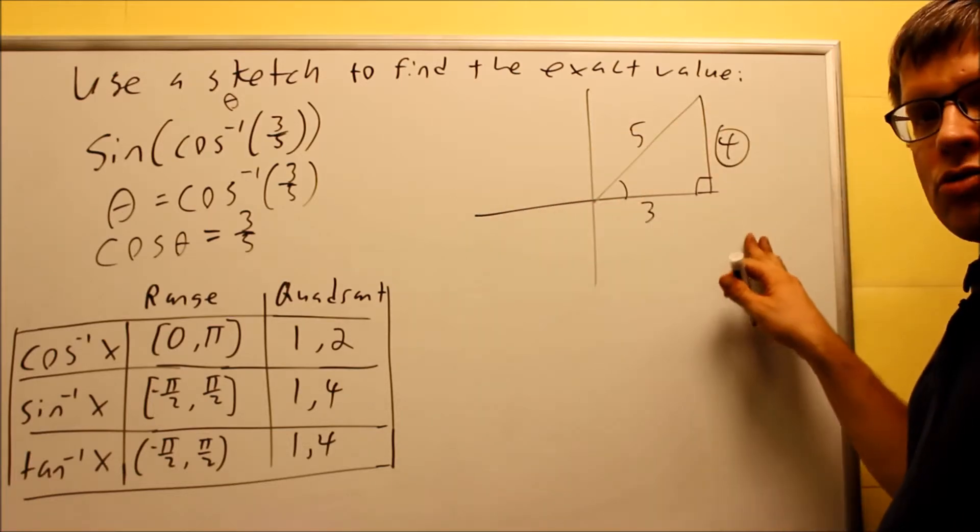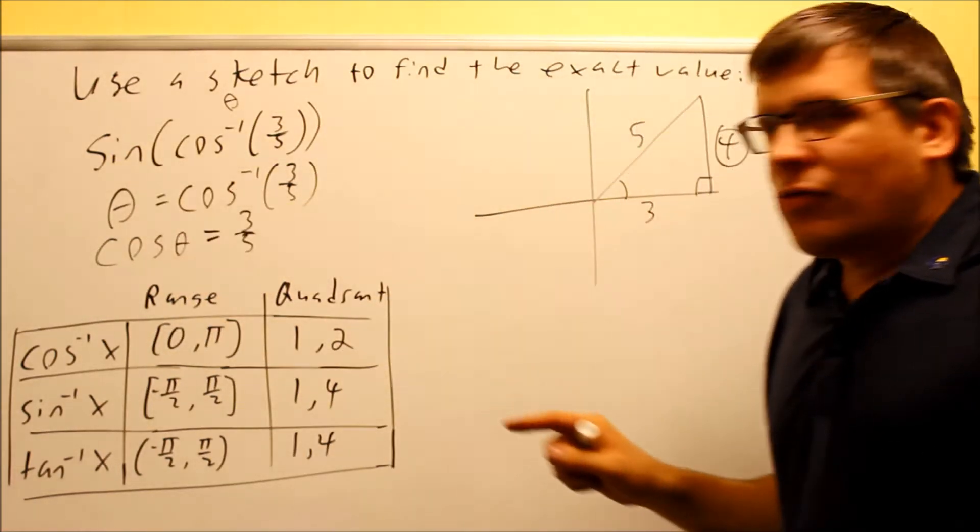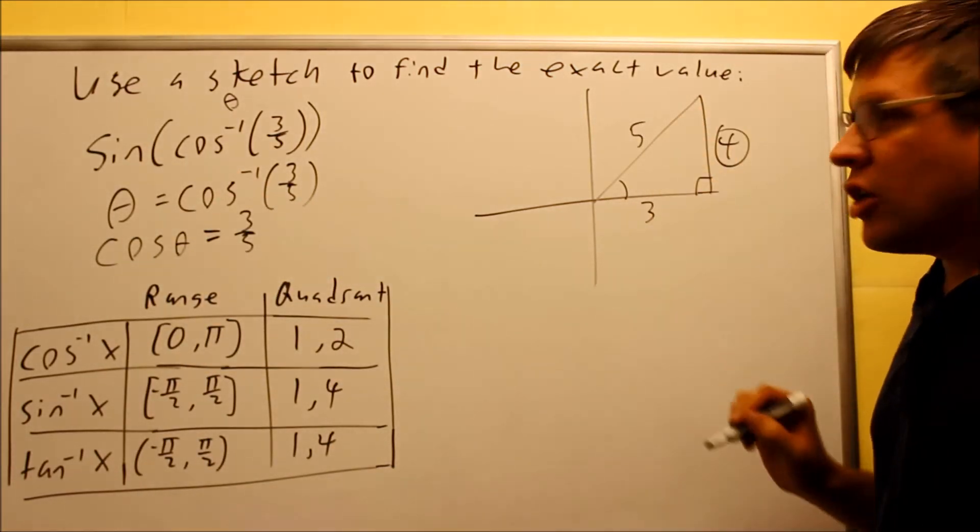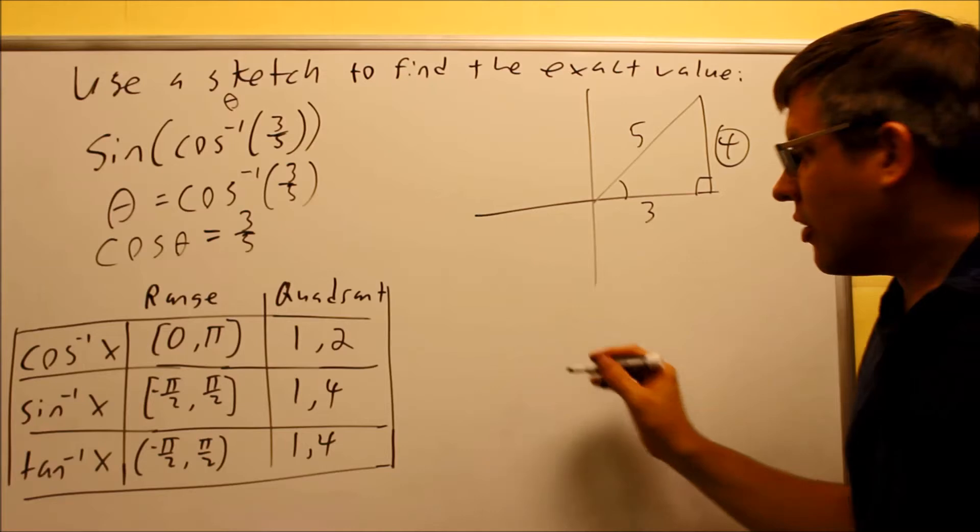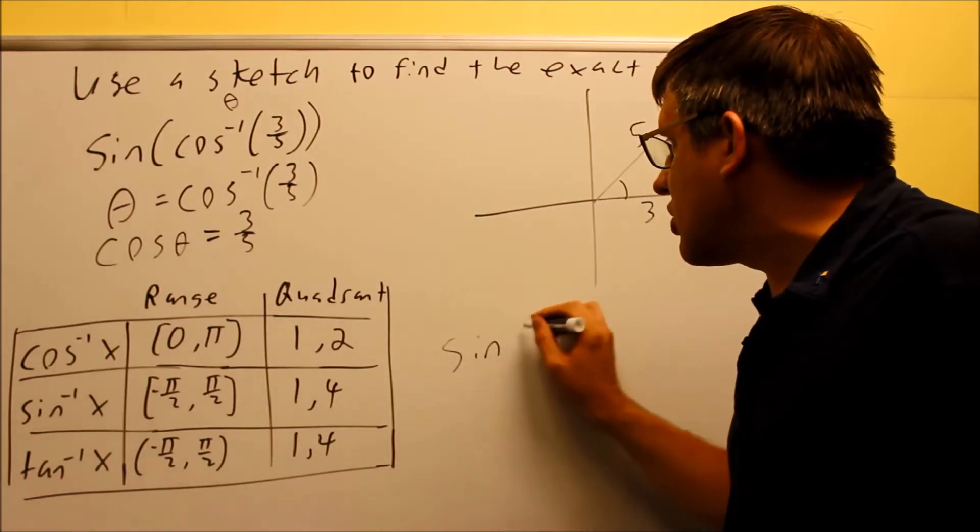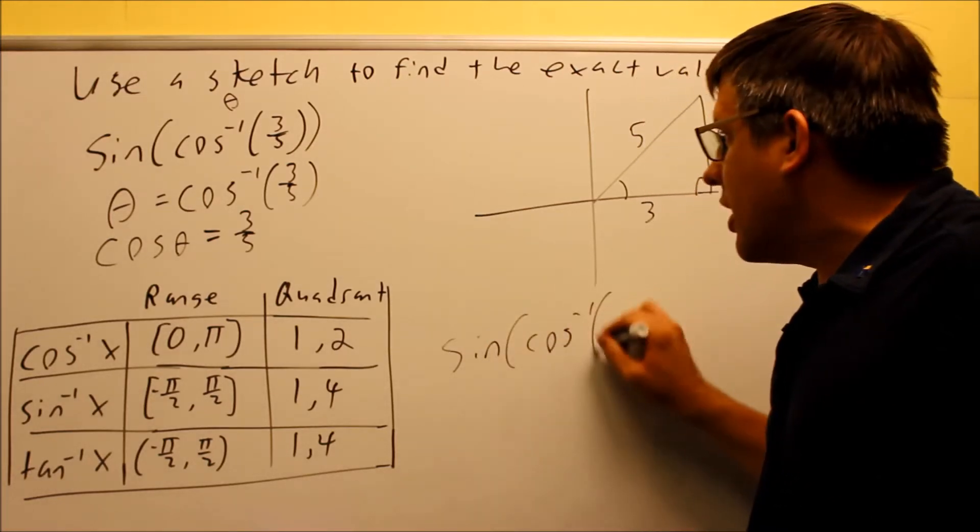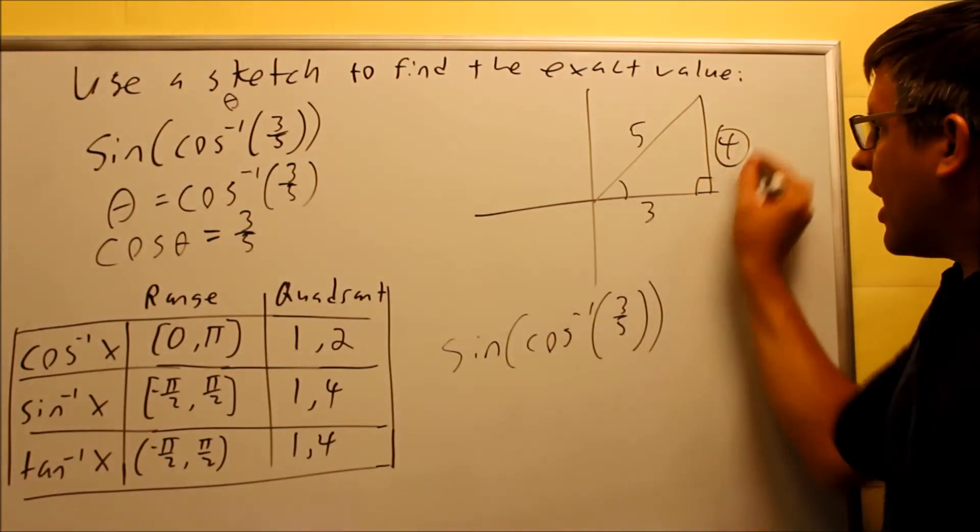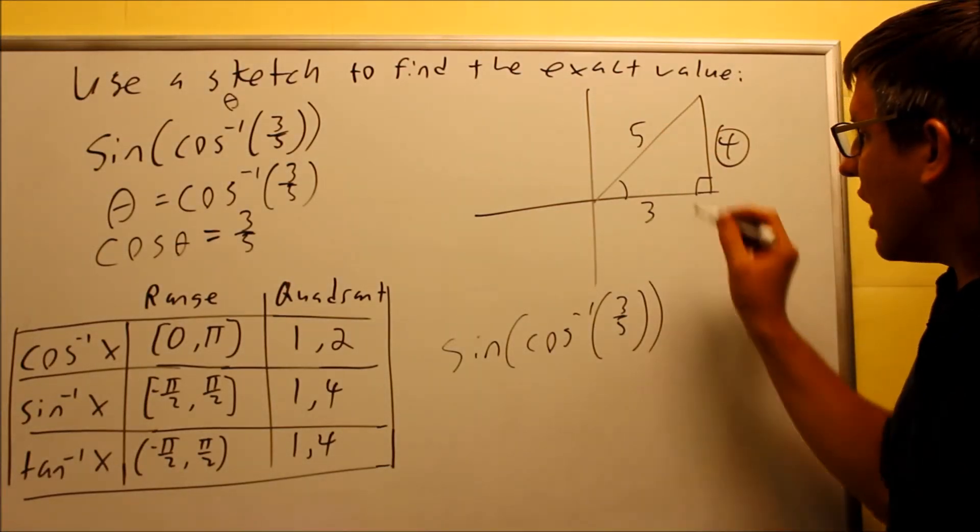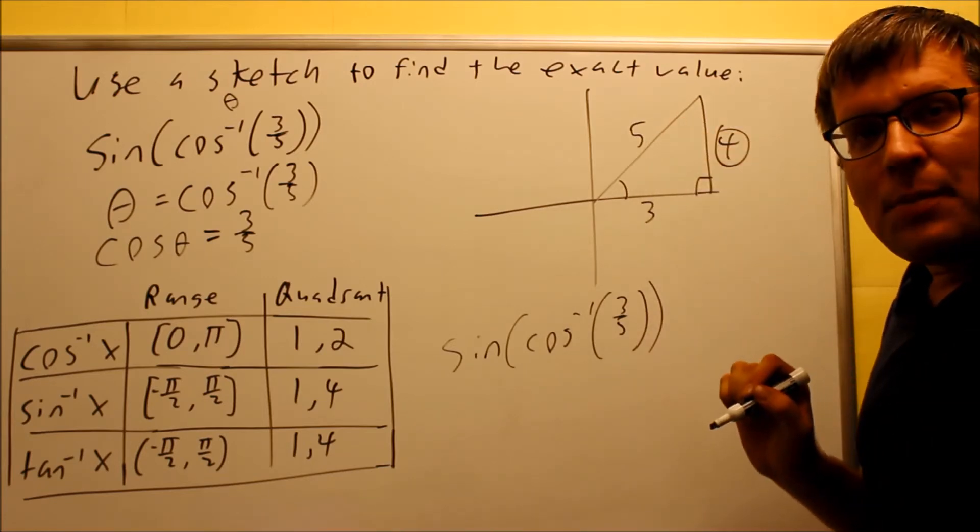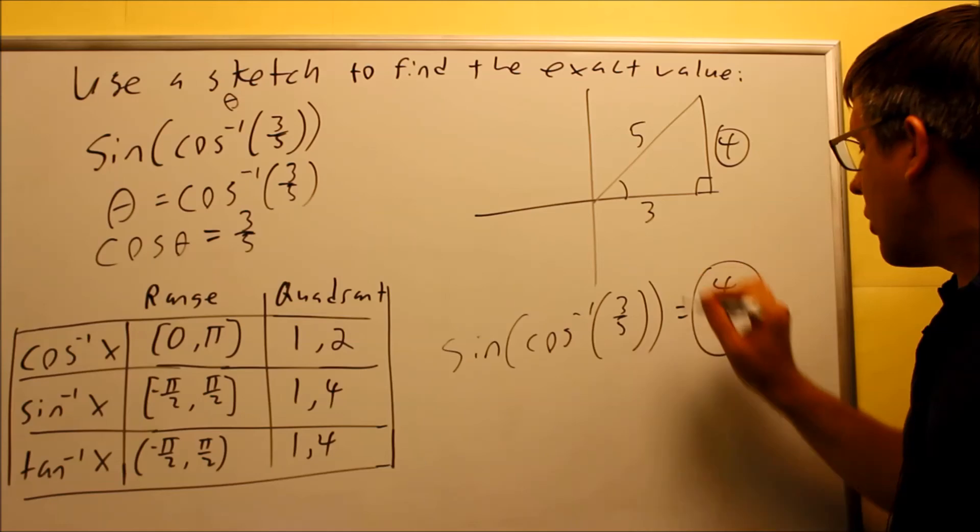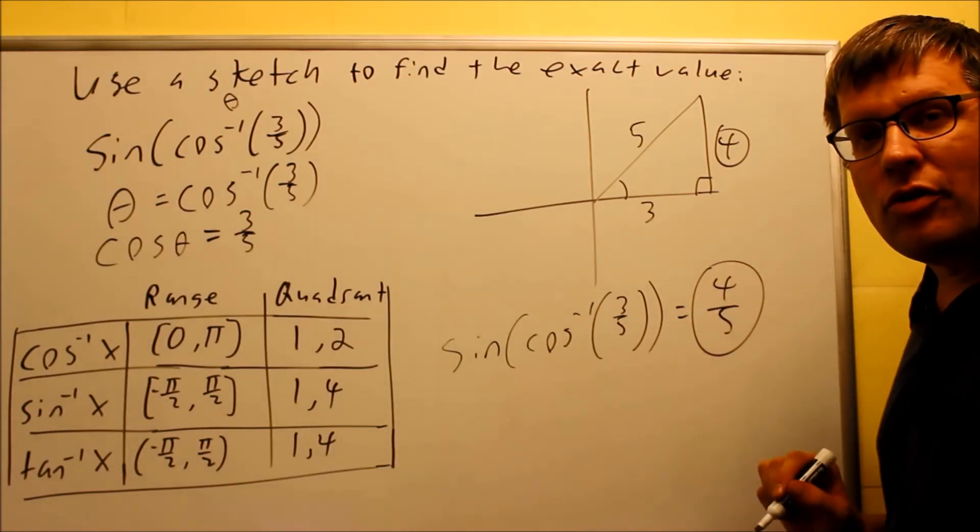The outside one is going to tell me what answer I'm going to pull from this, and that's going to be my final answer. So if I want to know what the answer for sine, inverse cosine, three fifths, that means that I'm going to pick sine from this triangle. Sine is the opposite over hypotenuse, and so in this case it's going to be four fifths. So the answer to the whole entire problem, that's my exact value, four fifths.